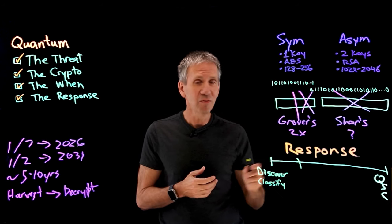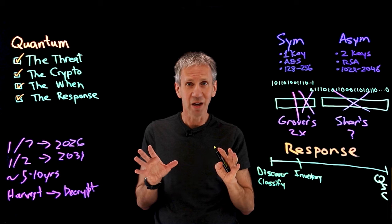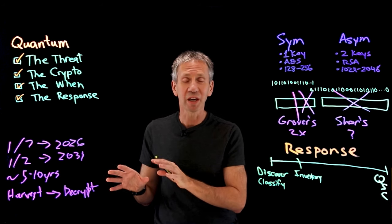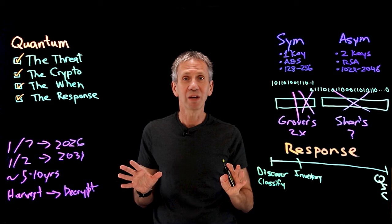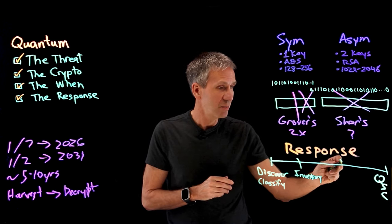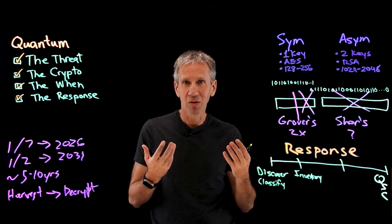The next thing is to do an inventory. Where is all of that data? Once I've looked at the kinds of data I have, where is it all located? Because eventually I'm going to need to go back and protect all of that stuff. If I don't know where it is, I can't protect it. And then ultimately I'm going to look at trying to create an ability that we call crypto agility.